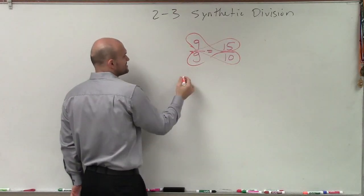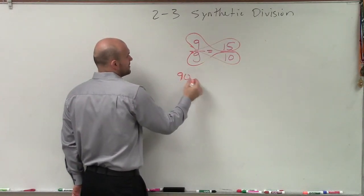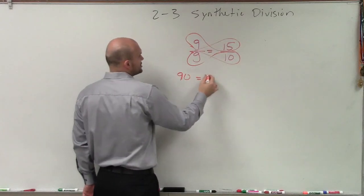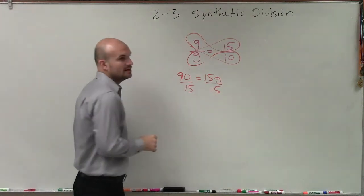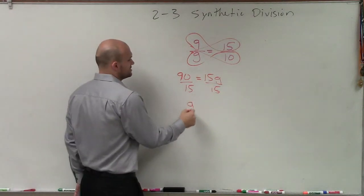So you say 9 times 10 is going to be 90. And then 15 times g is 15g, divided by 15, divided by 15, and therefore you get g equals 6.